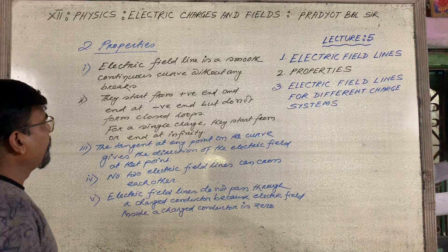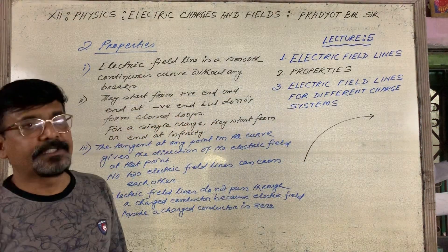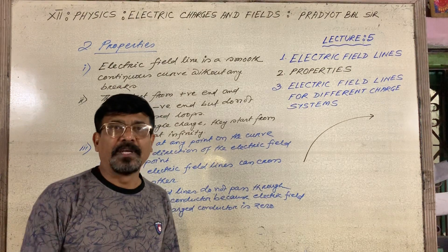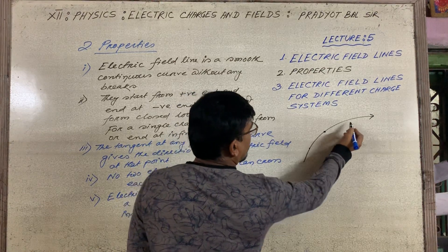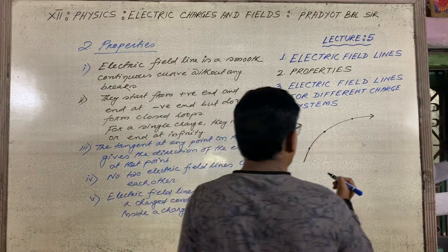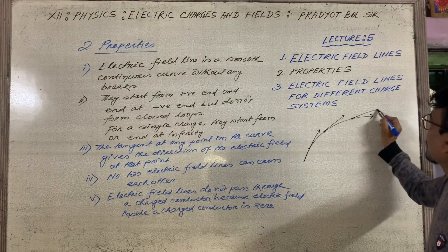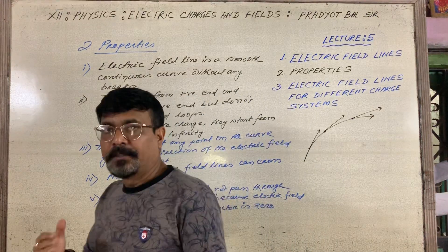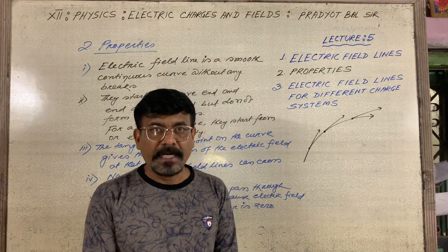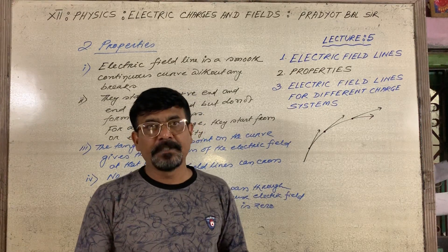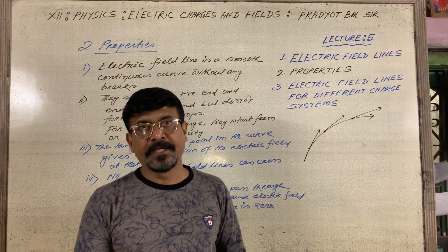For a clearer picture: an electric field line is a smooth continuous curve without any breaks, so if I draw a curve like this, this can represent an electric field line. Now if I take any point on the curve and draw a tangent at that point, the direction of the tangent gives the direction of the electric field. At different points, the direction of the tangents are different — meaning the direction of the electric field may be different at different points or positions.